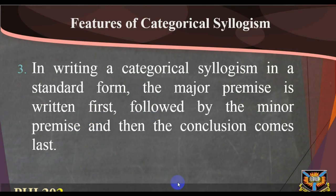Identify the major, minor, and middle term in this argument: 'All proteins are organic compounds. All enzymes are proteins. Therefore, all enzymes are organic compounds.' To attempt this, we first identify the conclusion by breaking the argument into standard form: All proteins are organic compounds; All enzymes are proteins; Therefore, all enzymes are organic compounds.